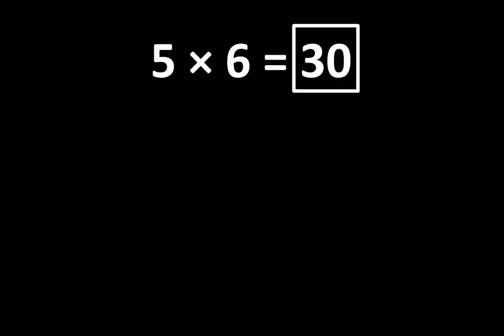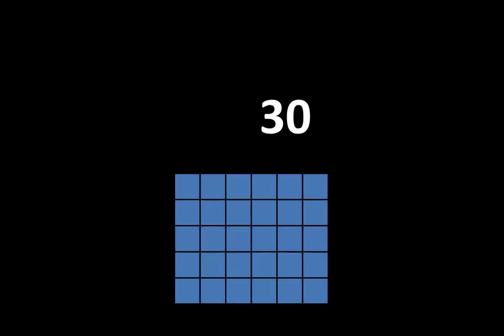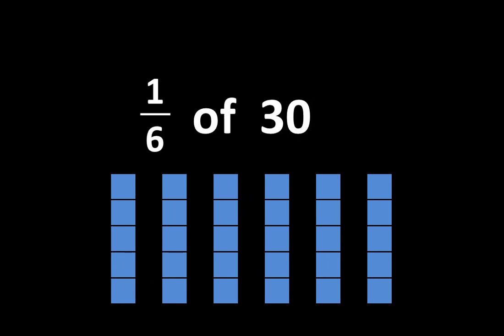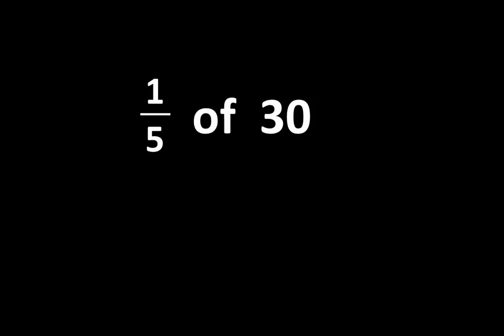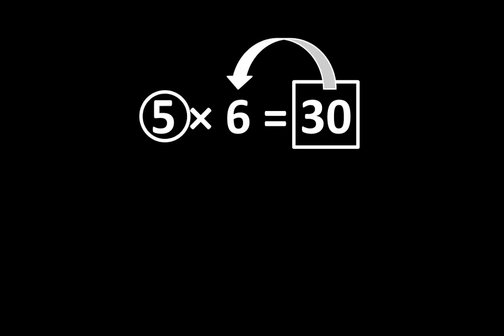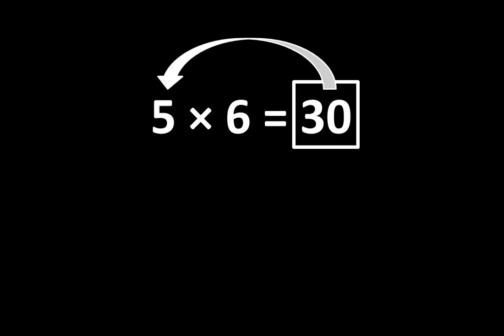5 x 6 is equal to 30, and there are many important ideas related to the number 30. If we divided 30 into 6 equal parts, each part would be 1/6 of 30, and 1/6 of 30 is equal to 5. And if we divided 30 into 5 equal parts, each part would be 1/5 of 30, and 1/5 of 30 is equal to 6. When you examine 5 x 6 equals 30, you may notice that 30 is greater than 5 and greater than 6. 30 is 6 times greater than 5, and 30 is also 5 times greater than 6.